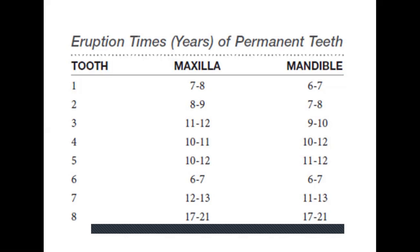The eruption sequence in the maxilla is generally 6, 1, 2, 4, 5, 3, 7, and in the mandible it is 6, 1, 2, 3, 4, 5, 7. There is a notable difference in the positioning of the canine in maxilla versus mandible.